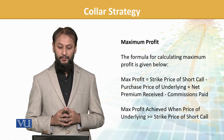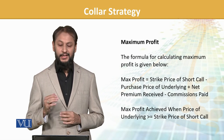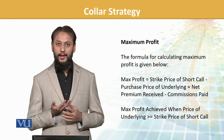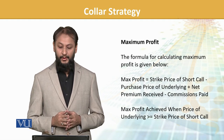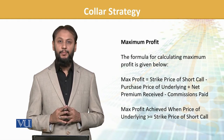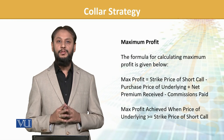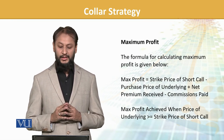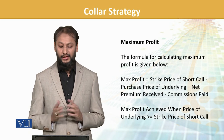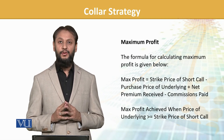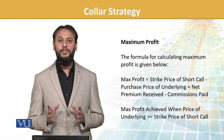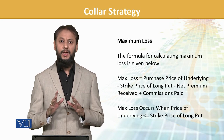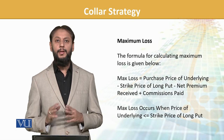Maximum profit from this strategy is: Strike price of the short call, minus the purchase price of the underlying asset, plus net premium received, minus any commissions paid. Maximum profit is achieved when the price of the underlying is greater than or equal to the strike price of the short call. In that situation, we get maximum profit. We will also work through this with figures, so don't worry.